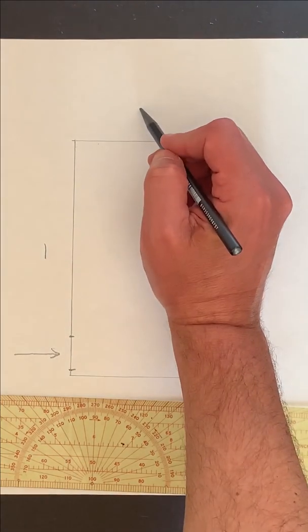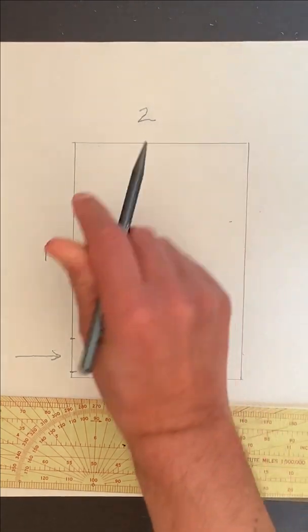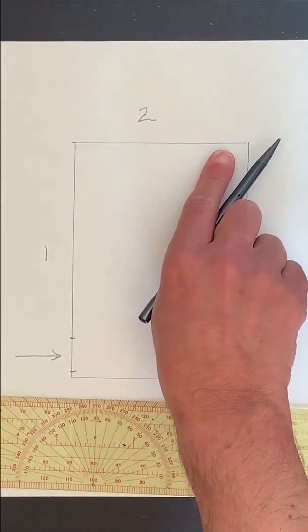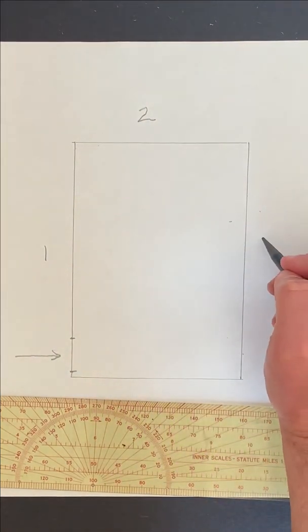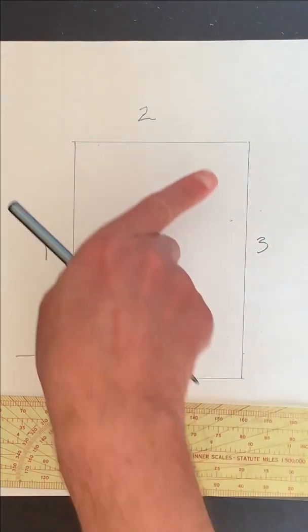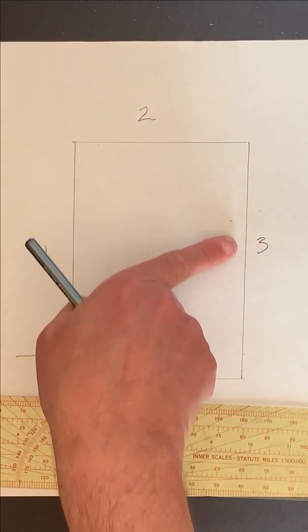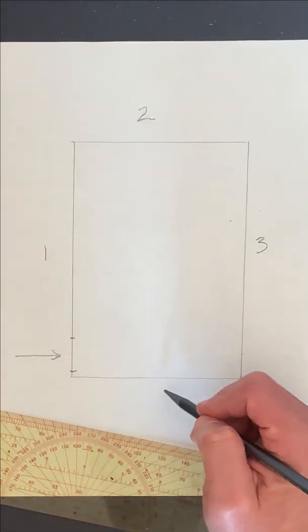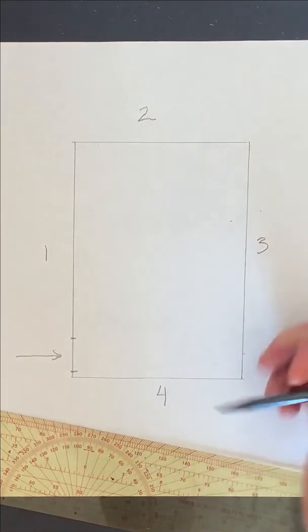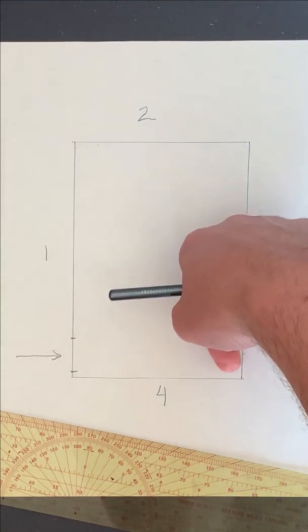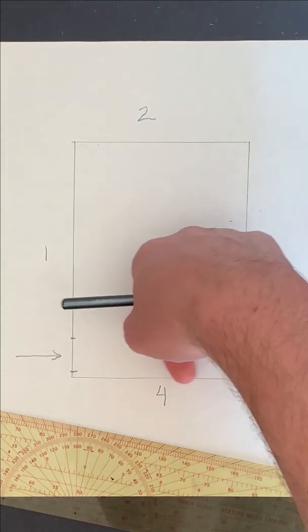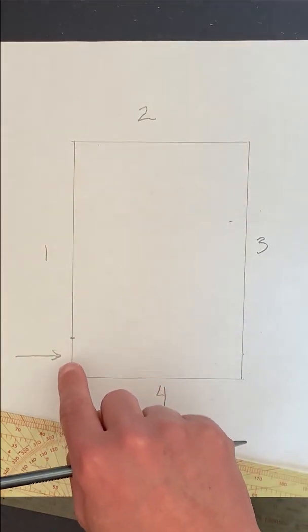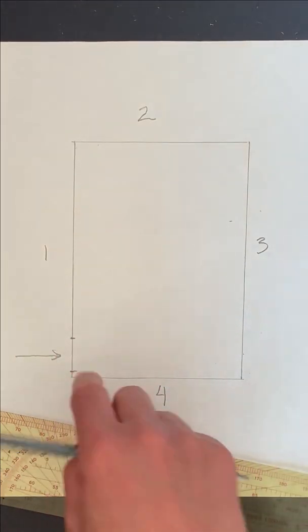Then we're going to look at wall number two. We're going to also start at the left and work our way to the right. Then we're going to work on wall number three. Again we'll start at the left going all the way to the right and then the final wall will be wall number four. And when we're looking this way, this will be our left and we'll be working our way to the right and that's where we will have started.